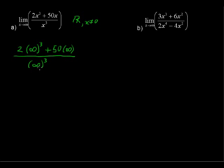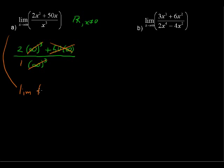Now what's going to happen? Infinity is humongous — it goes on without bound. So this 50 times infinity compared to infinity to the third power is nothing. It's insignificant compared to infinity to the third power — think of 10 billion cubed versus 50 times 10 billion. So we drop that term. Then infinity cubed divided by infinity cubed cancels out, and in the end all we have is 2 over 1. So the limit of f of x as x approaches infinity equals 2.